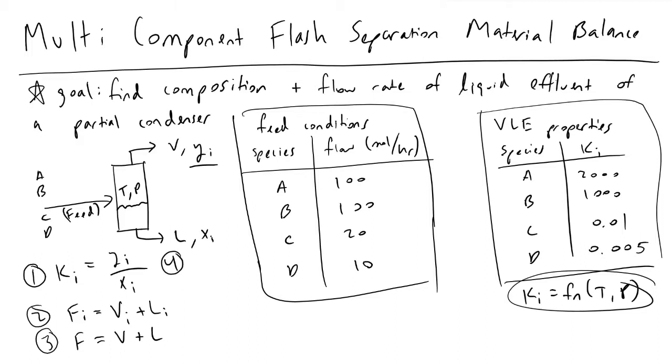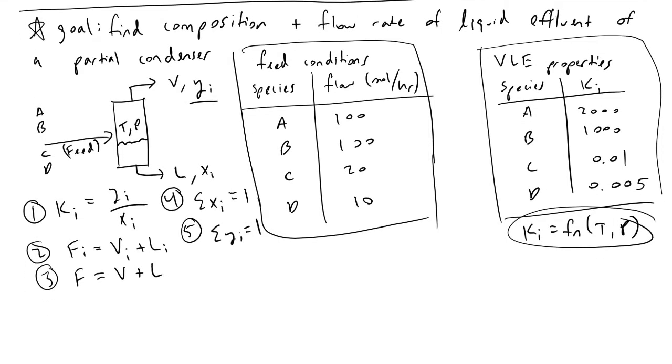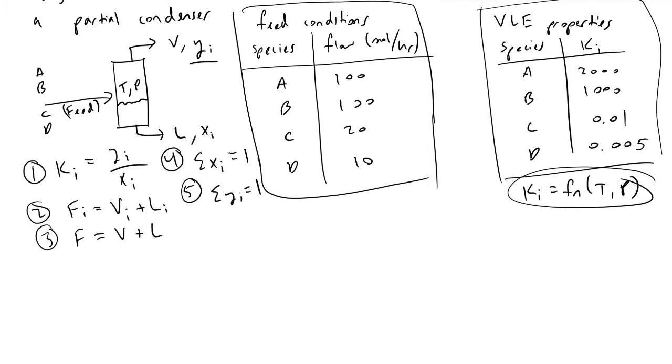We'll also note that if we sum up molar ratios, we should get unity—one—because these are percentages or relative ratios to the total number of moles. The same applies for vapor mole ratios.